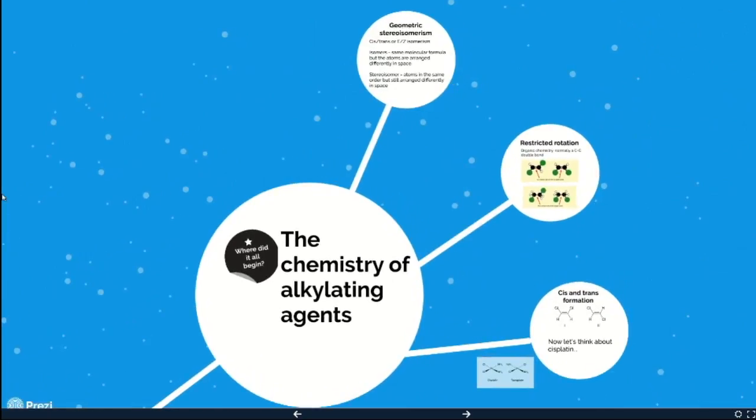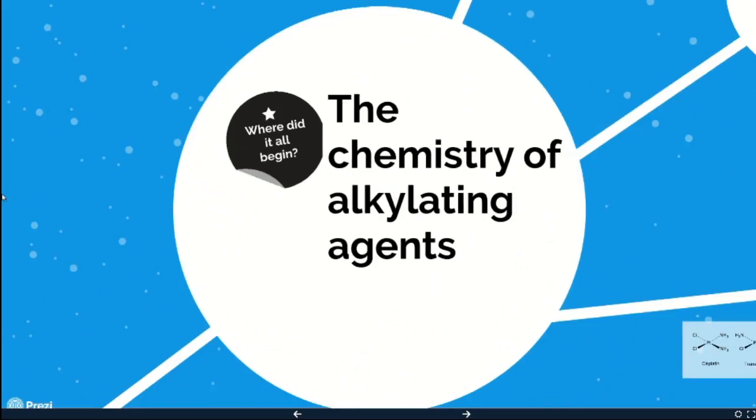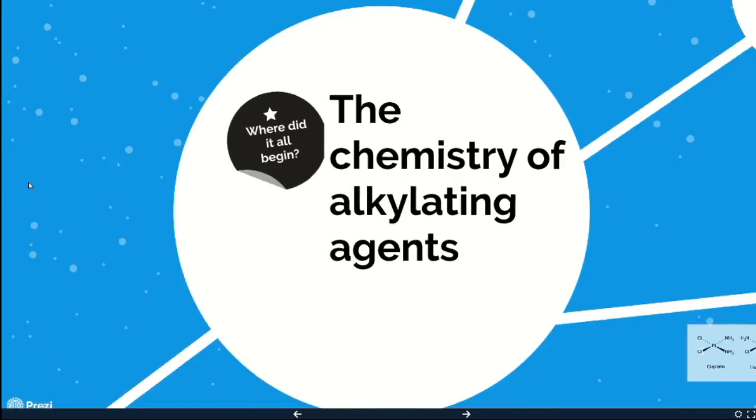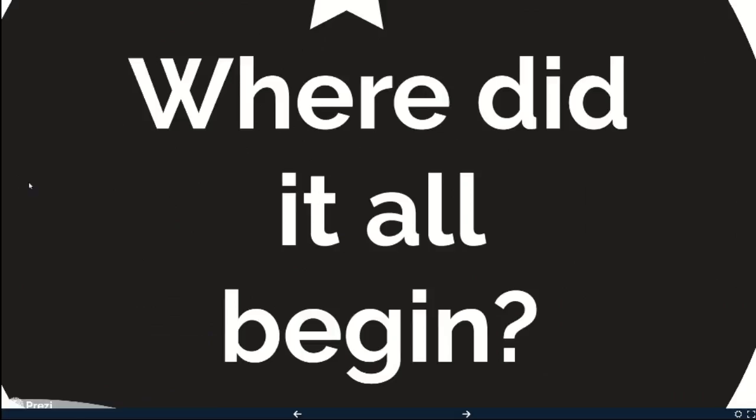So where are we off to next? Let's do a little bit of chemistry and talk about the chemistry of alkylating agents. Alkylating agents is a group of chemotherapy drugs. And they're the first non-hormonal drugs to be used effectively in the treatment of cancer. And the story behind them is quite interesting. So where did it all begin? Does anyone have any idea where chemotherapy first really came from?